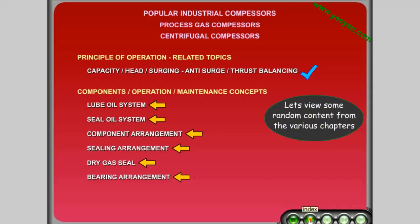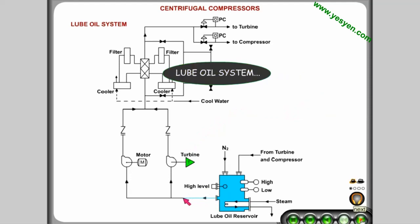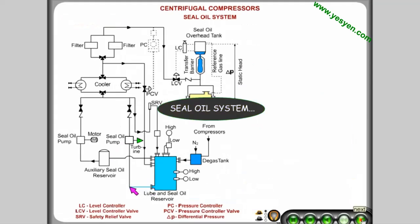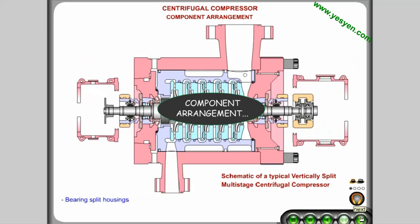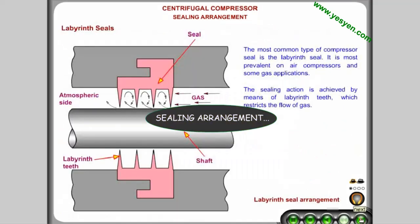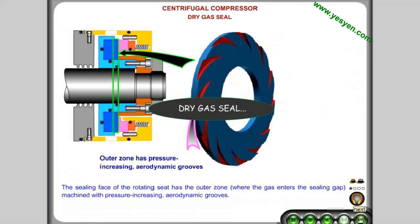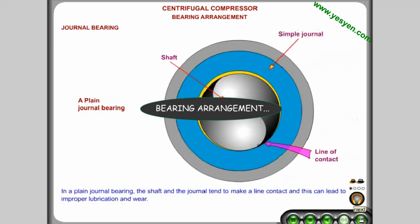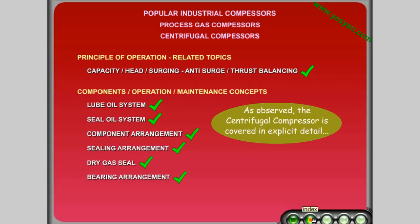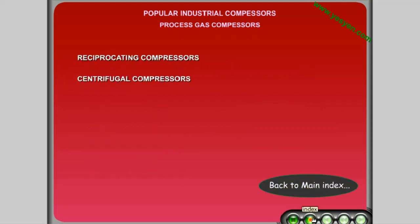Let's view some random content from the centrifugal compressor chapters. Topics include lube oil system, seal oil system, component arrangement, sealing arrangement, dry gas seal, and bearing arrangement. As observed, the centrifugal compressor is covered in explicit detail. Back to main index.